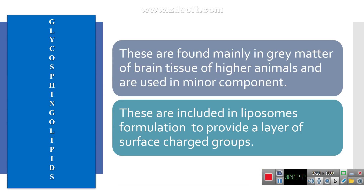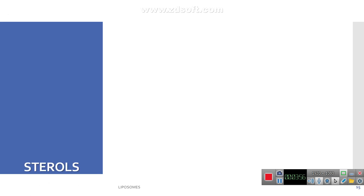Dicophospholipids are also used. They are found mainly in the grey matter of brain tissues of higher animals and are used as minor components. They are included in liposome formulations in order to provide a layer of surface charge groups.